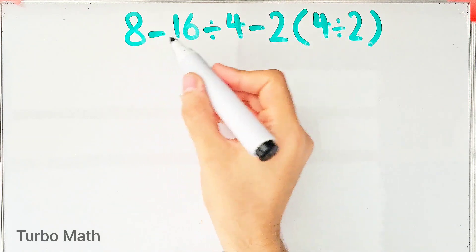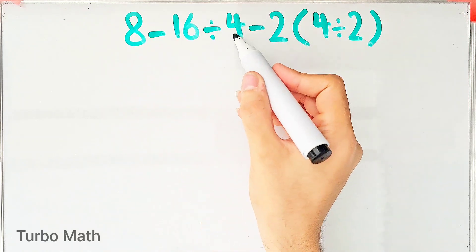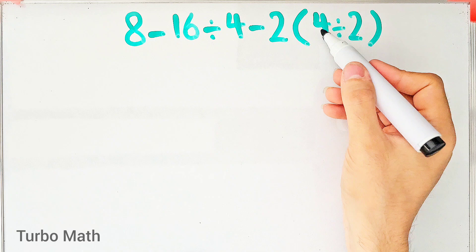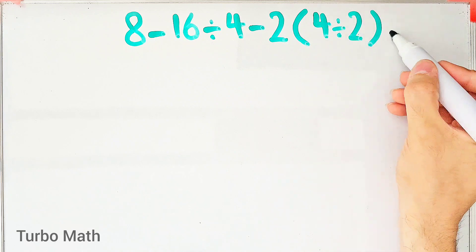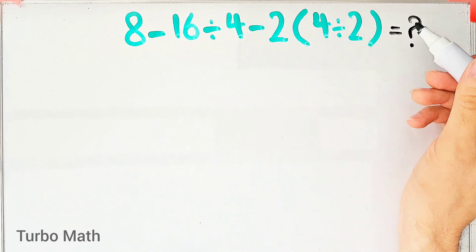8 minus 16 divided by 4 minus 2 then times 4 divided by 2. What is the answer of this question? Can you solve it?